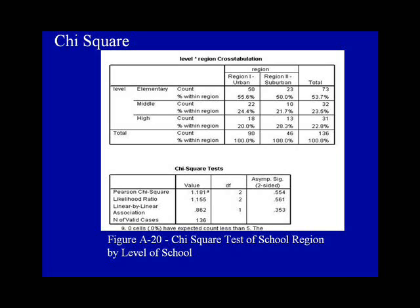The Chi-square statistic 1.181, with two degrees of freedom and a significance level of .554, indicates that statistically these groups are similar, and no statistical difference exists. Acceptable significance for Chi-square is generally at the .05 level. The significance level in this report, .554, is much higher, and therefore the conclusion is that these groups are not statistically different.